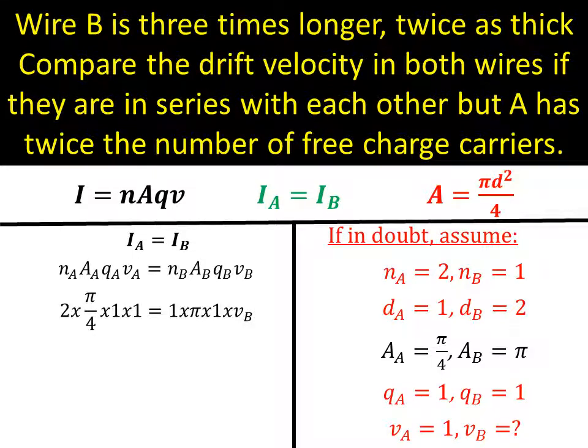Right. So I put those numbers in to my formula. I get that. The only unknown is vB. And it's a pretty straightforward formula. Then I rearrange it. And I end up with vB equals 0.5.